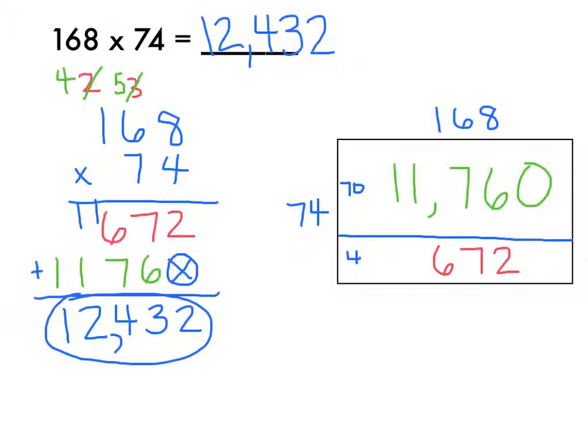And as you can see, using the traditional algorithm with 3 by 2 is not a whole lot different from 2 by 2. It's just going through a little bit extra steps and getting larger products in the end. Thanks so much for watching. I hope you learned a lot today.